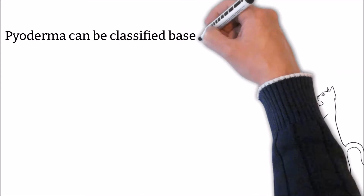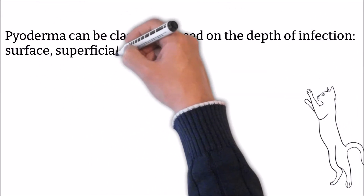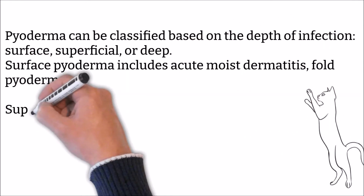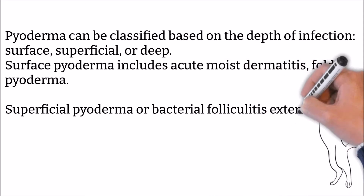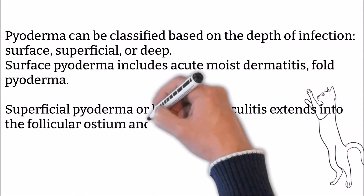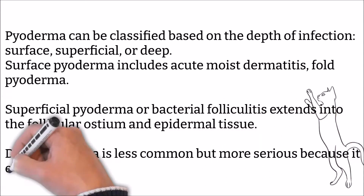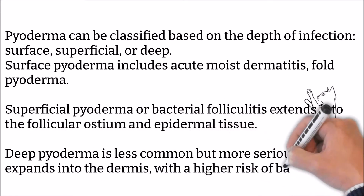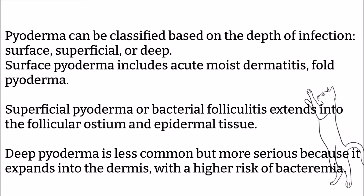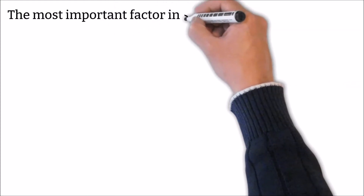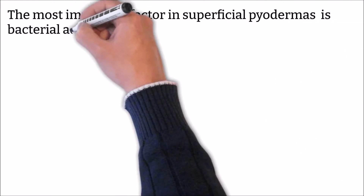Pyoderma can be classified based on the depth of infection: surface, superficial, or deep. Surface pyoderma includes acute moist dermatitis (hot spots) and fold pyoderma (intertrigo). Superficial pyoderma, or bacterial folliculitis, extends into the follicular ostium and epithelial tissue. Deep pyoderma is less common but more serious because it expands into the dermis with a higher risk of bacteremia, and is commonly associated with demodicosis.